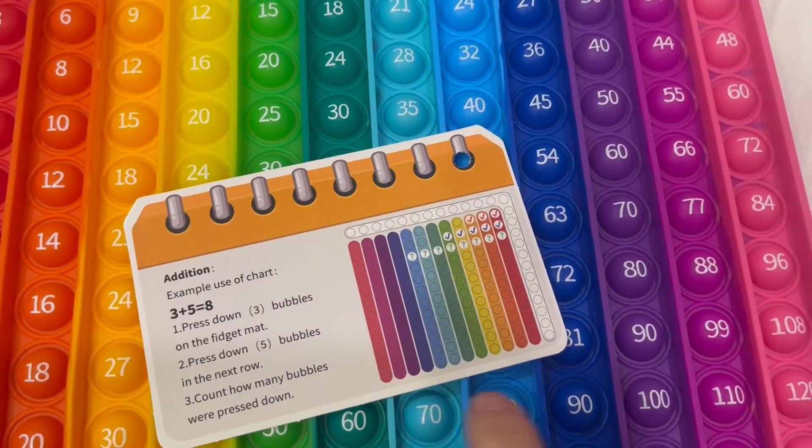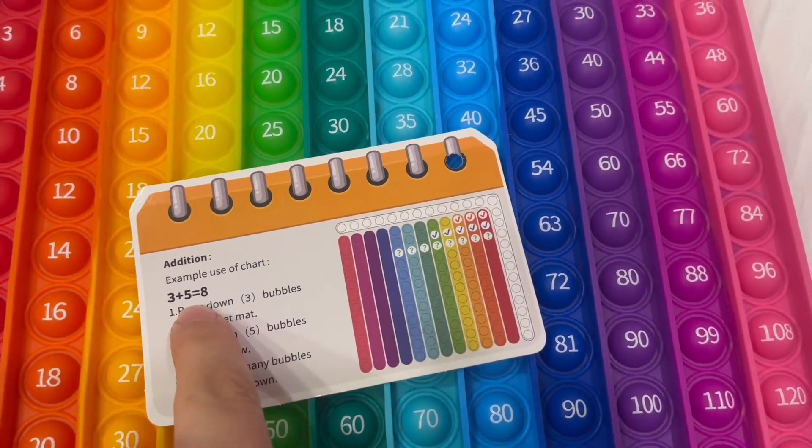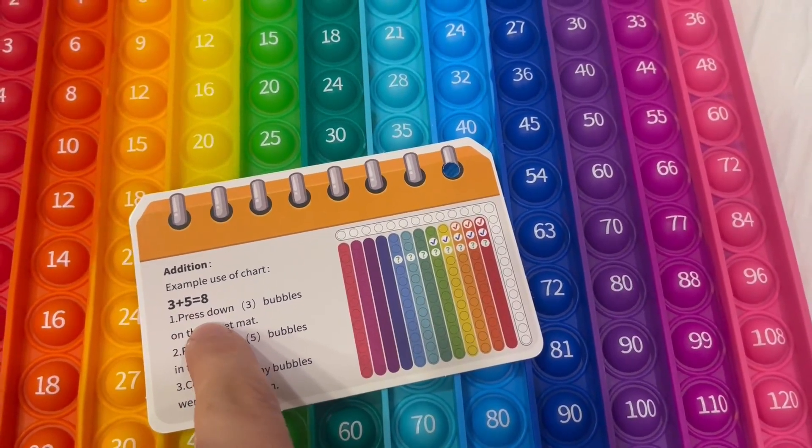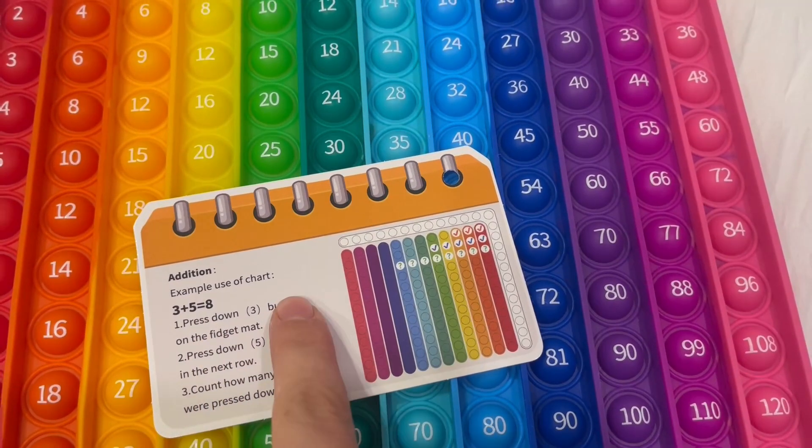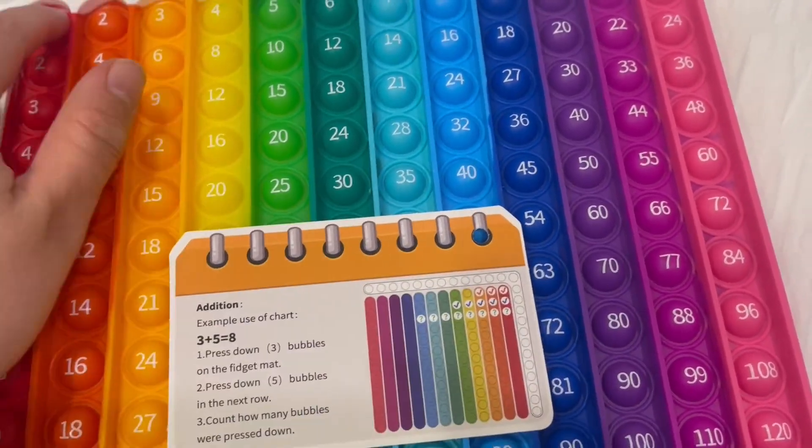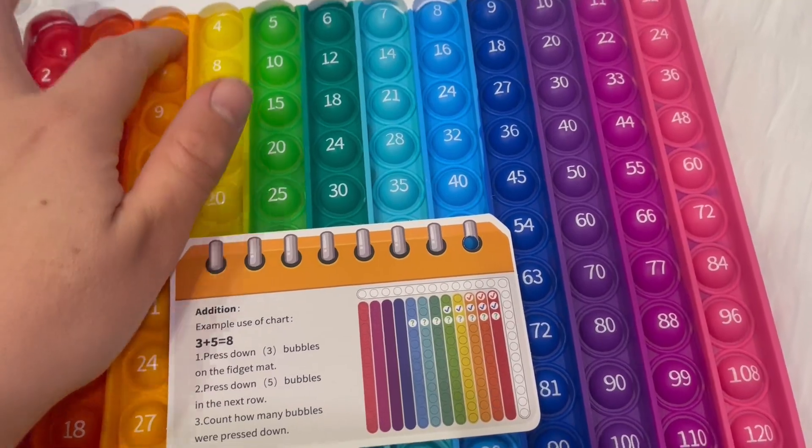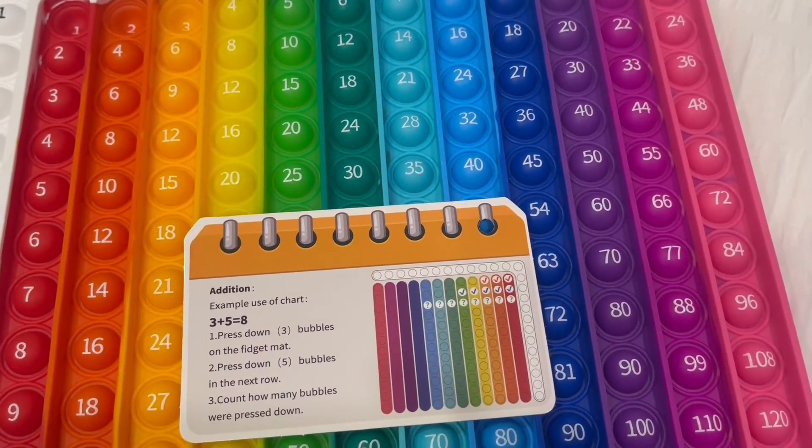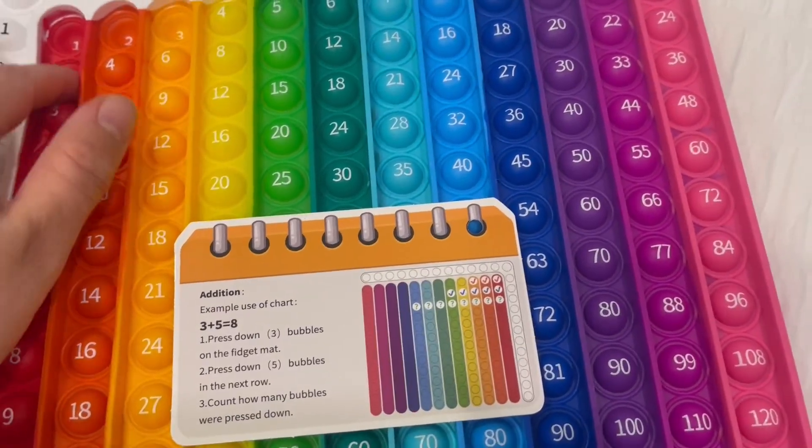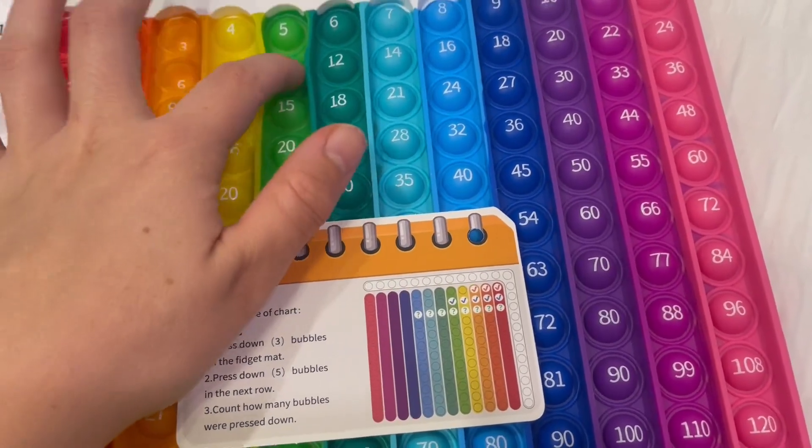So you have an example of how to use the chart. If you do 3 plus 5 equals 8, you push down three bubbles on the fidget mat. So one, two, three. And then press down five bubbles in the next row. One, two, three, four, five.